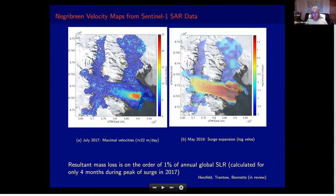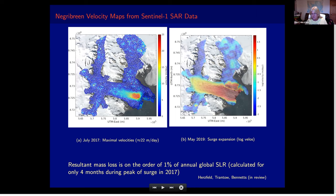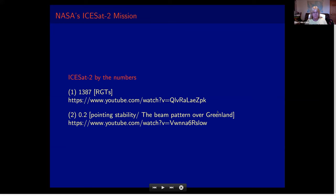One can also use velocity data. The ice moves really fast, so the primary tool is looking at velocity from Sentinel-1, a European satellite. In July 2017 first a small part of the glacier accelerates, and then the acceleration spreads throughout the entire glacier system. By 2019, two years later, the fast-moving area has grown bigger while the absolute velocity has gone down somewhat, but it is still definitely surging.